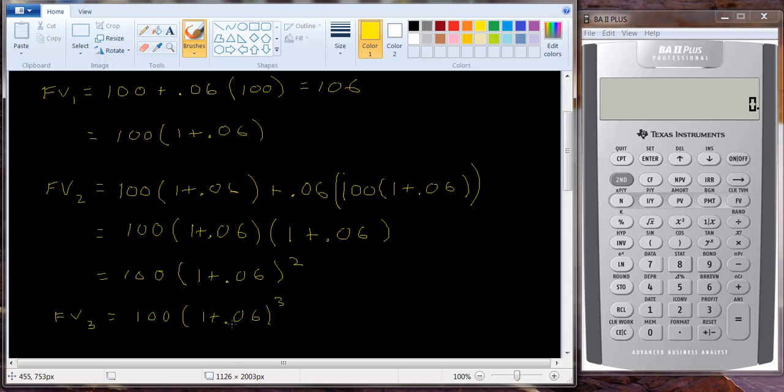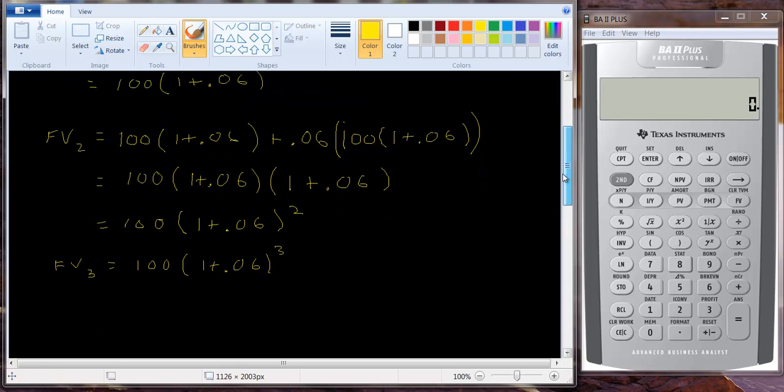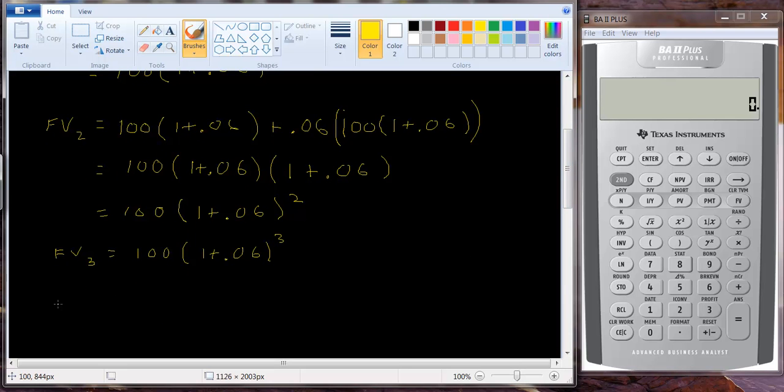And in fact we don't have to use six percent. We could use any interest rate. So the general formula here is that the future value in time period n is going to equal the present value. That's our lump sum deposit times one plus the interest rate raised to the nth power.